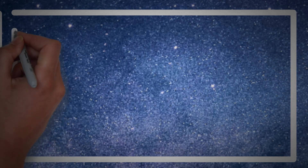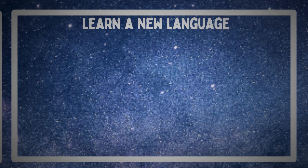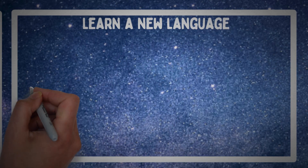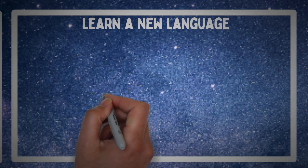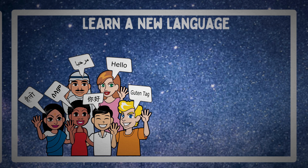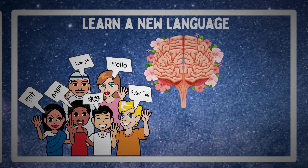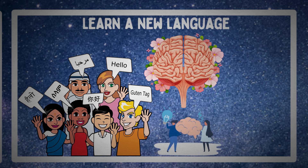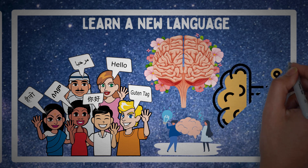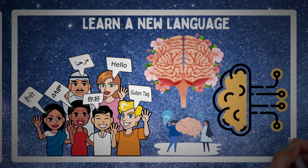Number 5: Learn a new language. We are all aware of the advantages of learning multiple languages. Our brain starts functioning more effectively when we begin learning a new language. Our cognitive abilities become stronger and we can increase our IQ levels by learning new languages. Also, the neural pathways connecting the various parts of the brain are strengthened by learning a new language.